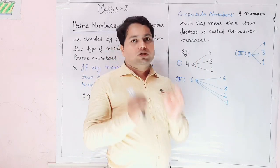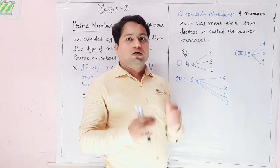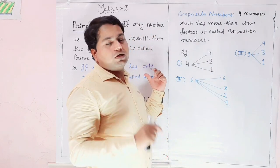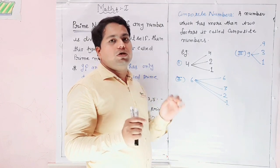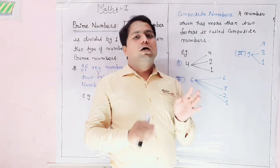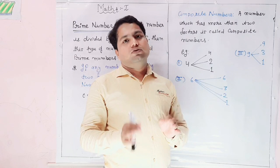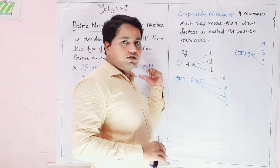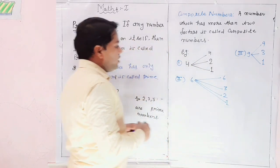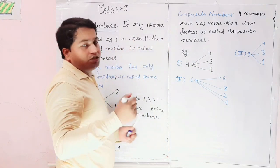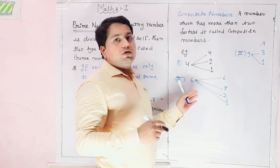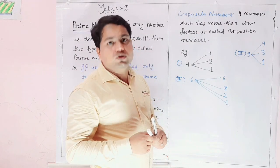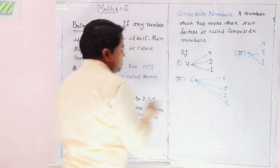So 4, 6, 9, 12 etc. are composite numbers. If a number has more than two factors, it is a composite number. But prime number has only two factors. The difference is: two factors versus more than two factors. For example, if you want to know whether a number is prime or composite, you can divide it.